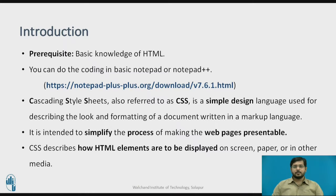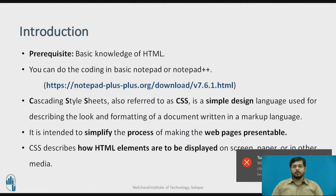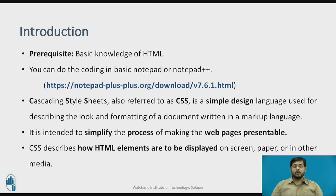CSS is Cascading Style Sheets. It is used to design the HTML. For example, take an analogy of a building structure. When you build or construct a building, it's just a building, but when you apply different colors in the interior, exterior, and when you build up furniture, that's the design for the system — that is called the CSS. CSS describes how the HTML will be displayed on the screen, paper, or in other media.